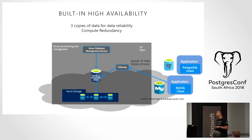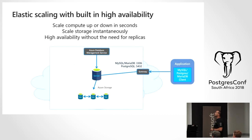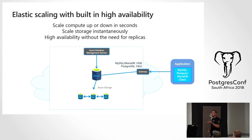With built-in high availability, you get three storage replicas and compute redundancy. Because compute and storage are segregated, it's easy to provide high availability — the storage access layer has three replicas, and the compute layer moves wherever it needs to via microservices. It literally takes between 1 and 30 seconds for the compute image to come back up and reattach to the storage access layer.